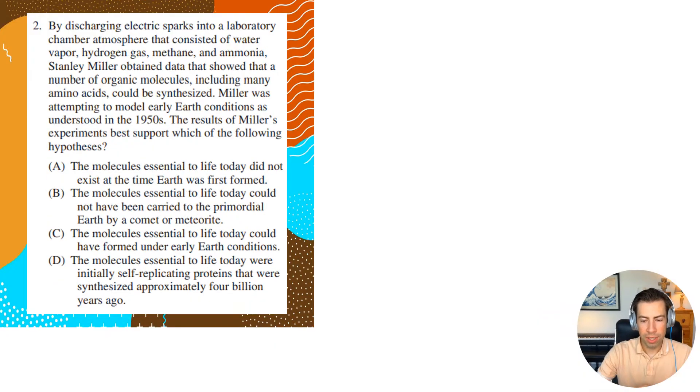Okay, question number two. I'll just go ahead and briefly read through it. So basically it says, by discharging electric sparks into a laboratory chamber that consisted of water vapor, hydrogen gas, methane, and ammonia, Stanley Miller obtained data that showed that a number of organic molecules, including amino acids, could be synthesized.